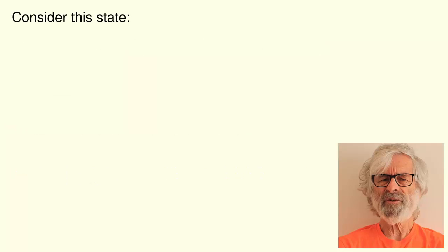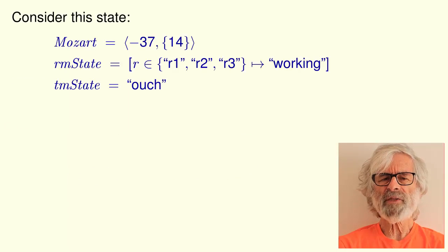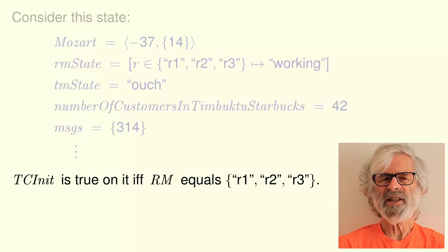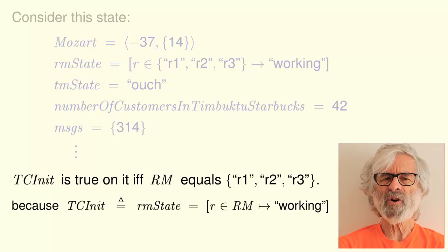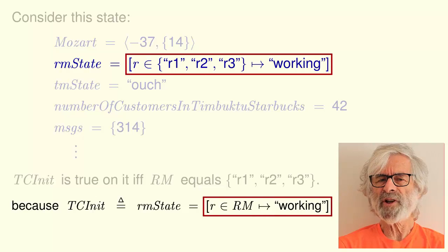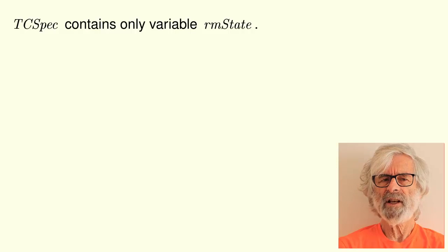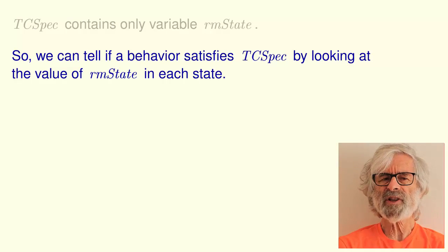Weird, huh? Consider this state. I'm just showing the values it assigns to a few of the infinite number of variables. TCInit is true on this state if and only if RM equals the set of three strings R1, R2, and R3. That's because this is the definition of TCInit. And this is the value of the variable RMState in that state. The only variable formula TCSpec contains is RMState. So we can tell whether or not a behavior satisfies TCSpec by looking only at the values assigned to RMState by each of the behavior's states.